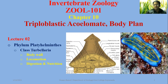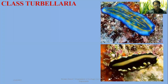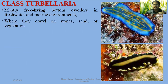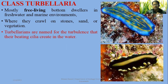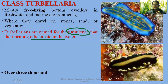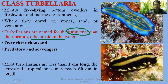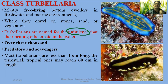The three topics are: body wall, locomotion, and digestion and nutrition in this free-living Platyhelminthes class. Free-living flatworms are mostly bottom dwellers, whether in a freshwater or marine environment. They live on the bottom and usually move with the help of their cilia, gliding on surfaces, vegetation, and sand. Their name is Turbellaria because they generate specific turbulence — turbidity in the water — due to their beating cilia during movement. There are over 3000 species, mostly predators and scavengers, and their size ranges from 1 cm to 60 cm long.